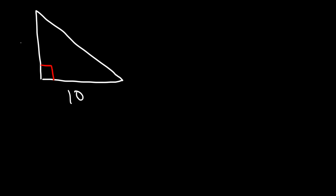In this video, we're going to focus on the many different ways of finding the area of a triangle. So in our first example, let's say that we have a right triangle. Let's say the base is 10 and the height is 12. Go ahead and find the area.